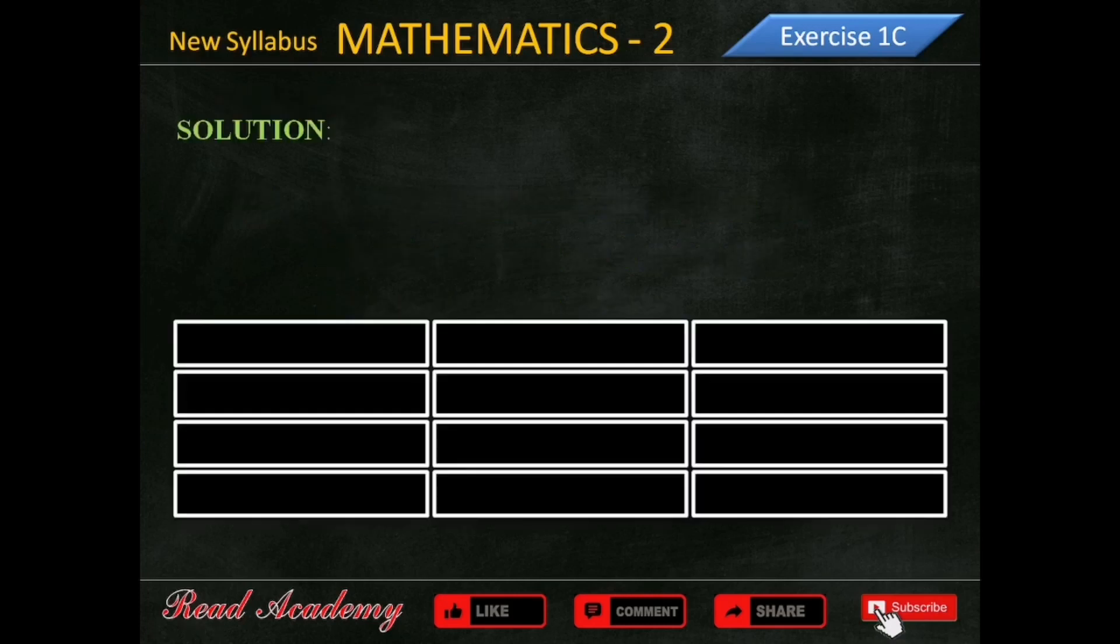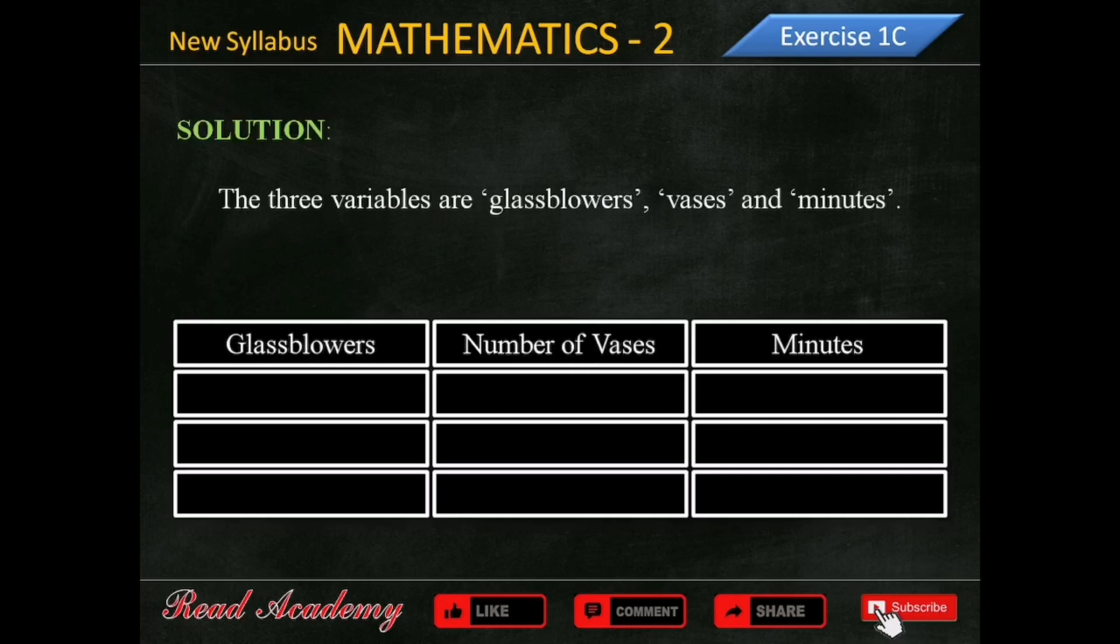We are going to solve this question in two steps. The three variables in this question are number of glassblowers, number of vases, and number of minutes. In the first step, we are going to keep the number of vases constant.